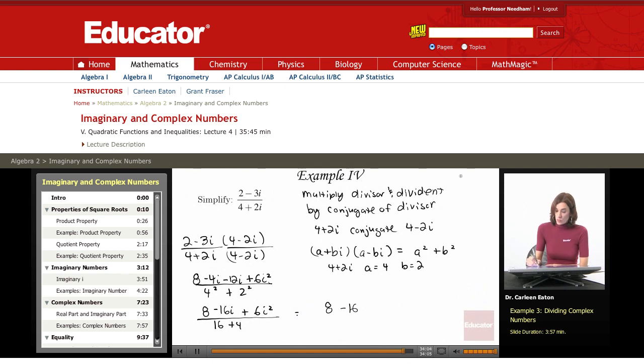Recall that i squared is negative 1. So I'm going to substitute negative 1 here. The denominator, I've just got 16 plus 4 is 20.